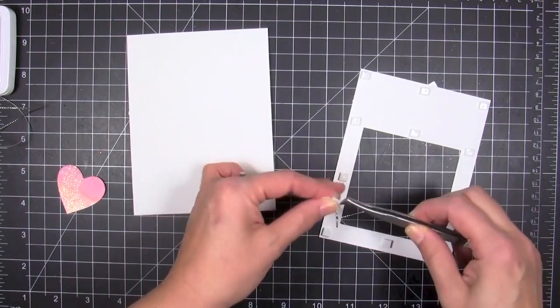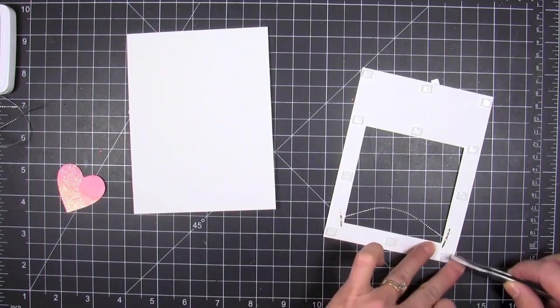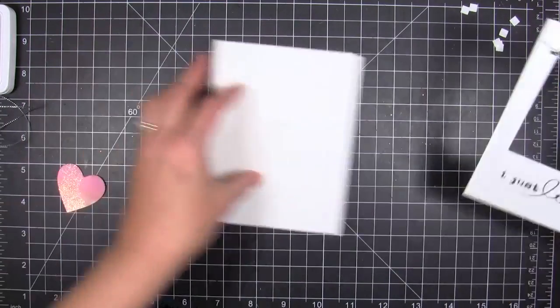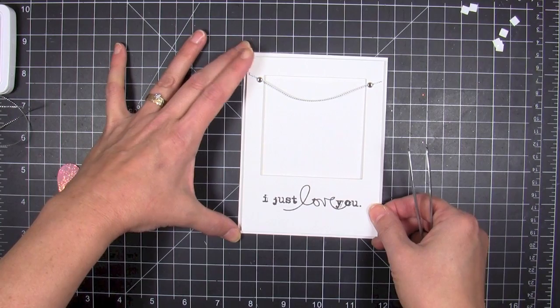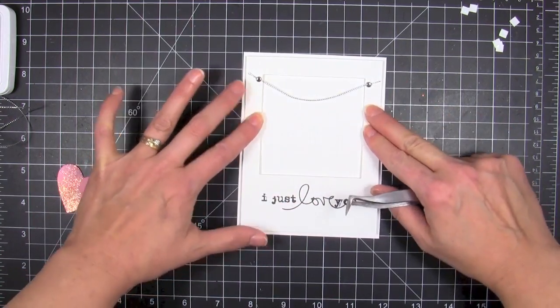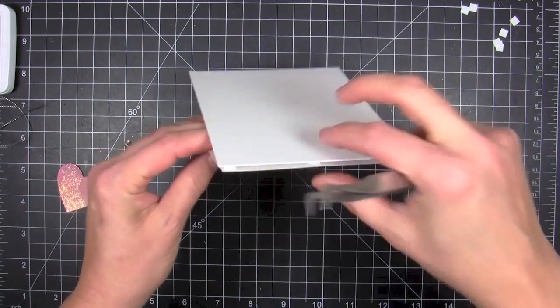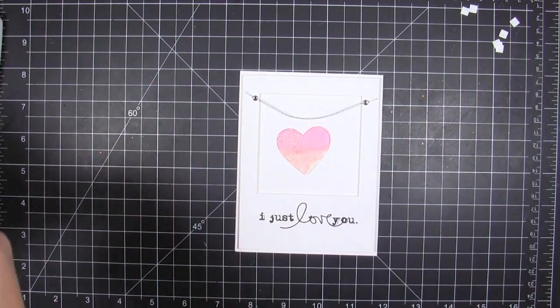I'm gonna use the 1/8 inch foam dots, the 3D dots, to go ahead and elevate that frame. They're a little bit thicker than what I normally use and I think it accommodates the dimension of the heart and the little clothespin much better. Once I have that in place, you can see the thickness there, it's a nice size thickness.